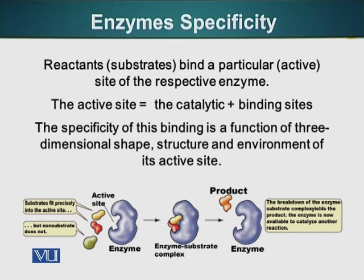For example, the catalytic domain may have the ability for hydrogen bonding and may have positively charged areas. So a substrate that has a negative charge, has the ability to do hydrogen bonding, and has the shape that can fit in the active site of the enzyme — that is the only substrate that will be able to fit the enzyme and allow the enzyme to facilitate the chemical reaction.